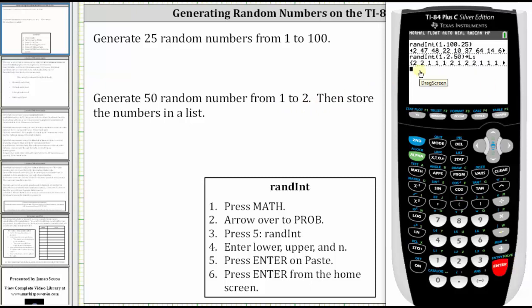Notice the random numbers do still appear on the home screen. So we can scroll right to view all 50 random numbers, but they are also in L1. To view L1, press STAT, ENTER. In the column L1, we can also view all 50 random numbers from 1 to 2.